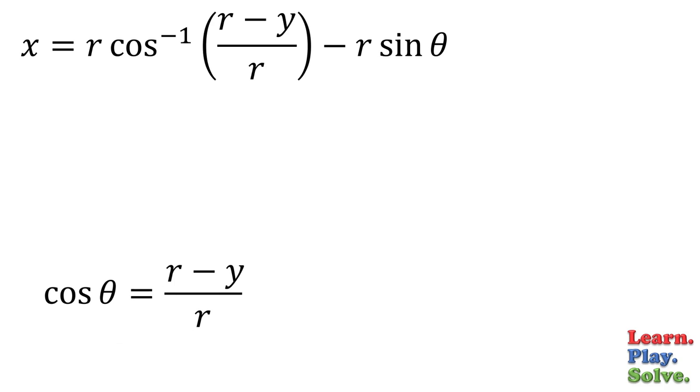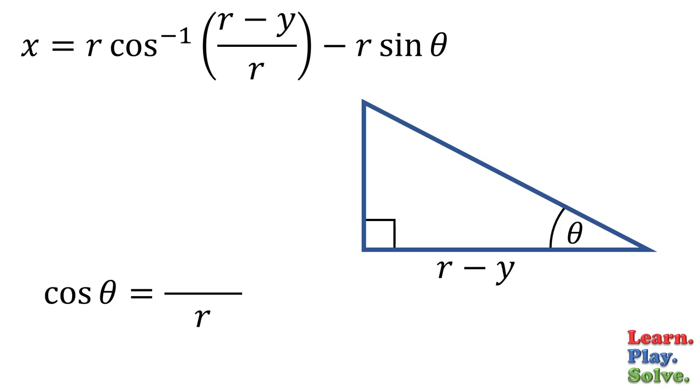Now let's use this information to construct a right triangle with angle theta. Cosine is adjacent over hypotenuse.